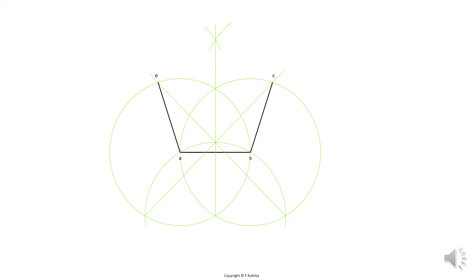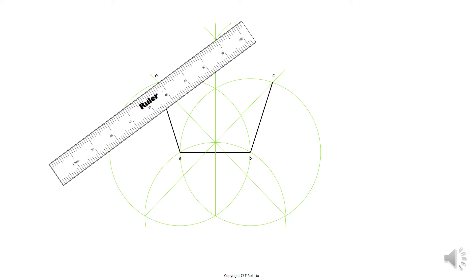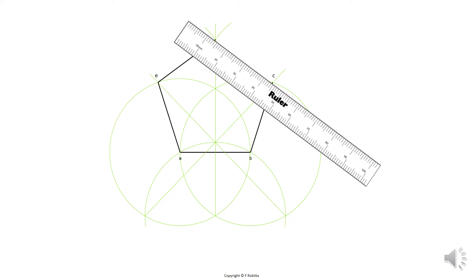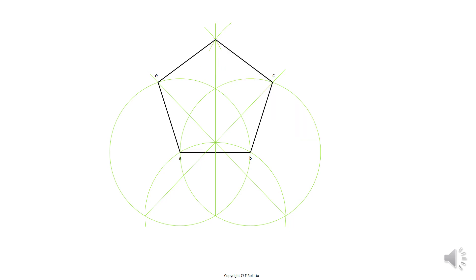We complete this method of constructing the pentagon by placing our ruler on E and aligning it with the intersection of the two small arcs at the top, then drawing a solid line. Now place your ruler on C and align it again with those two small arcs at the top and draw a solid line from C. Once we have done this we have the profile of our pentagon and we just need to label D.